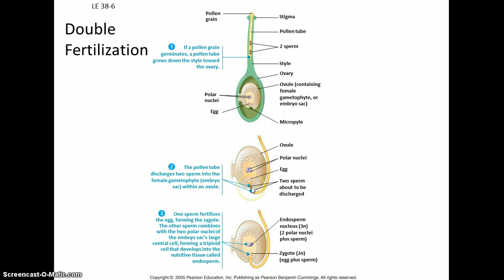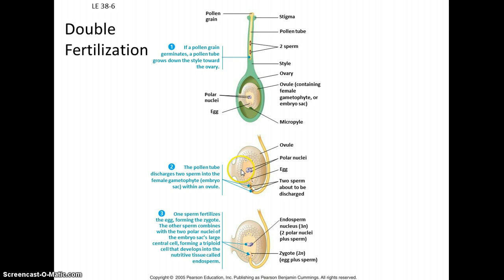There's an opening in the ovule known as the micropyle, and you can see this here in the embryo sac. We have eight cells, and these are all haploid cells. Being the gametophyte, it's a multicellular haploid structure.